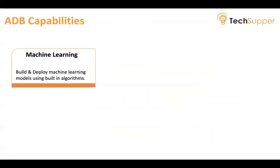Now let us discuss ADB capabilities. Machine learning in Oracle Database supports data exploration, preparation, and machine learning modeling at scale using SQL, Python, R, REST, AutoML, and a no-code interface. It includes more than 30 high-performance in-database algorithms, producing models for immediate use in applications.